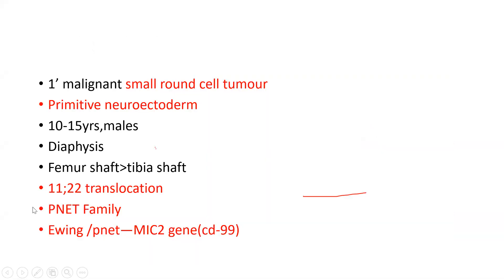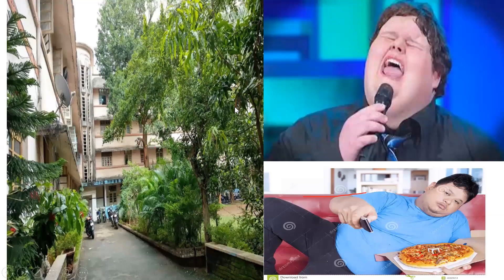Round cell, same family — PNET family. MIC2 gene. All students pass — PAS positive. CD99 is the marker. So CD99, MIC2, PNET family, 11;22 translocation, young males, round cell. Think of Ewing's sarcoma.